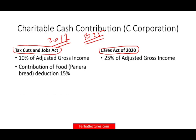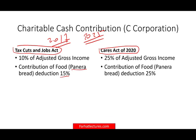Also, for contributions of food by corporations — like supermarkets or Panera Bread — you could previously take up to 15% of AGI. Under the CARES Act, they increased it to 25%. Obviously, they want supermarkets and restaurants to contribute to food banks because people are using food banks — they lost their jobs, need food to eat, and need the extra help. So contribute to food banks and you'll get a deduction.